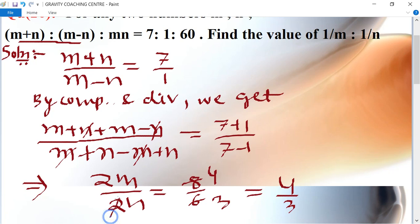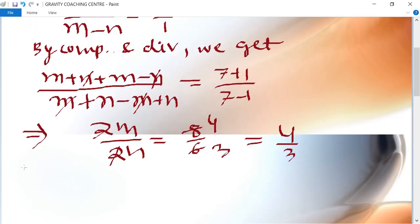2 to cancel, so let m equal to 4k and n equal to 3k.